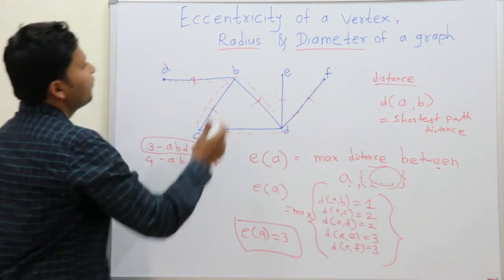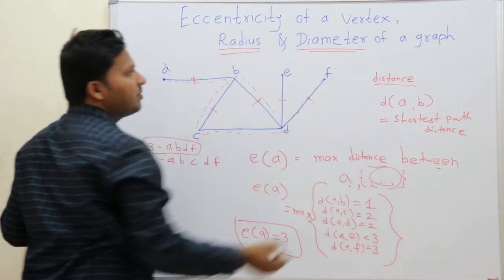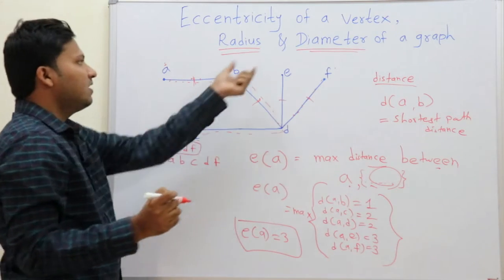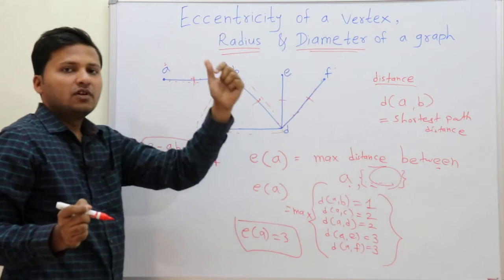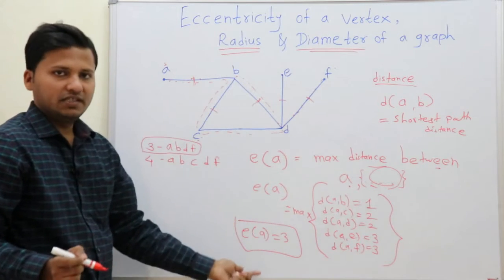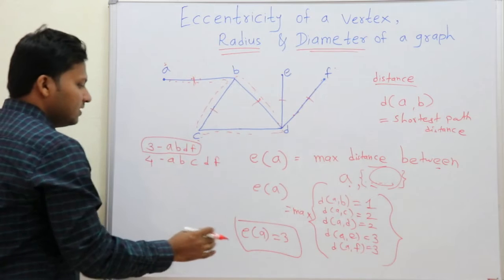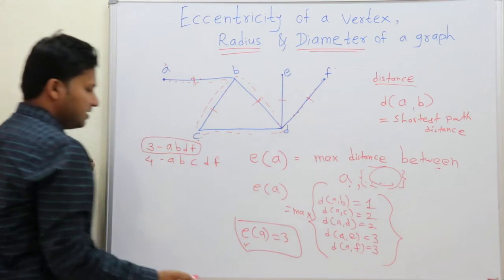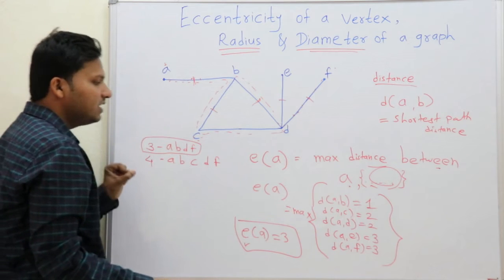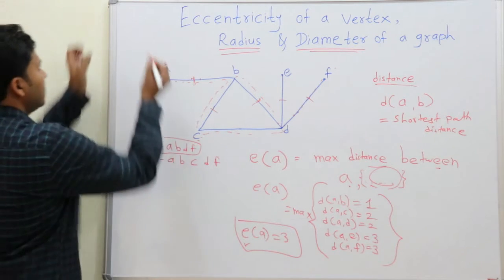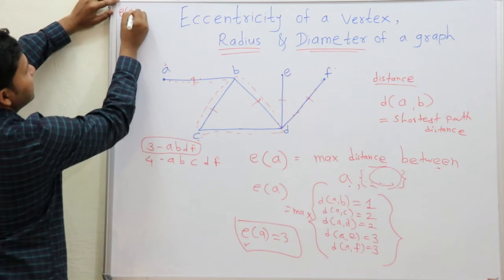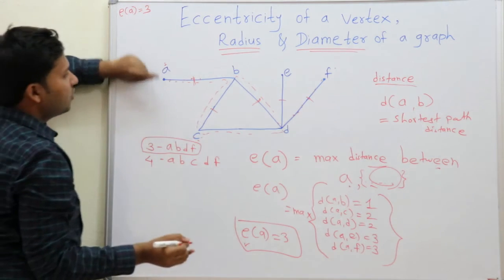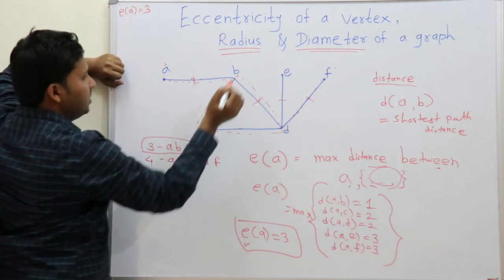Now let us go to the radius and diameter of a graph. We can find the radius and diameter using the eccentricities. The eccentricity of A is 3. To find radius and diameter, we need to find out the eccentricities of all other vertices as well.